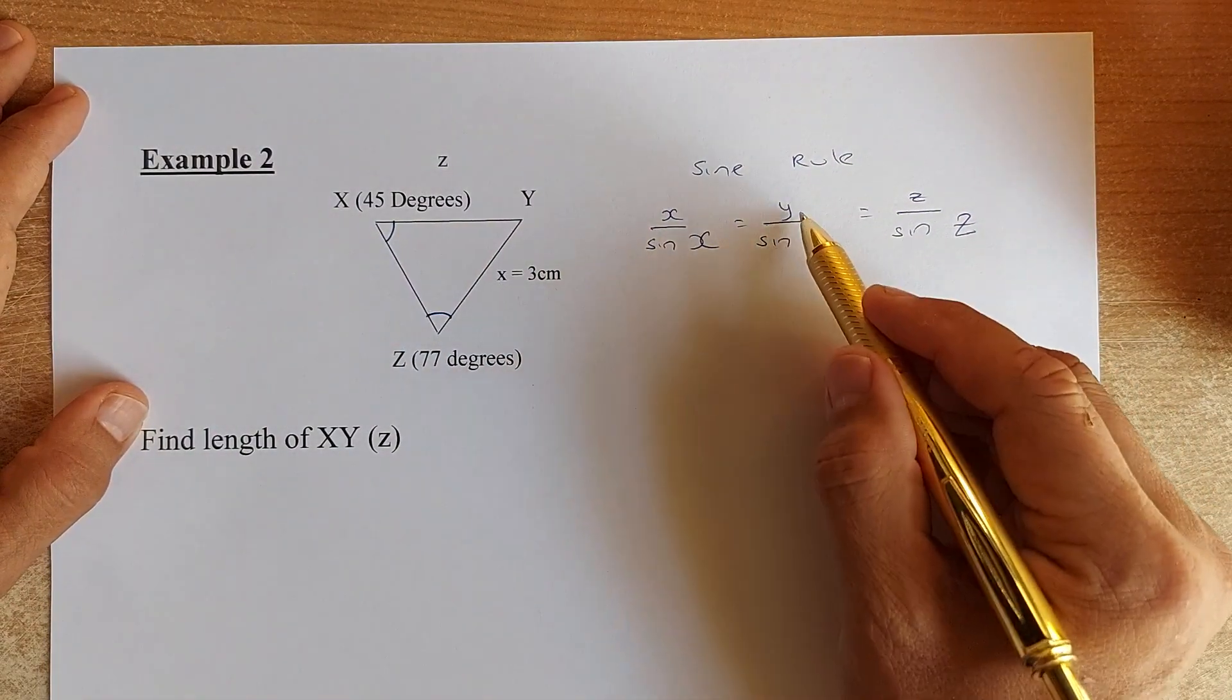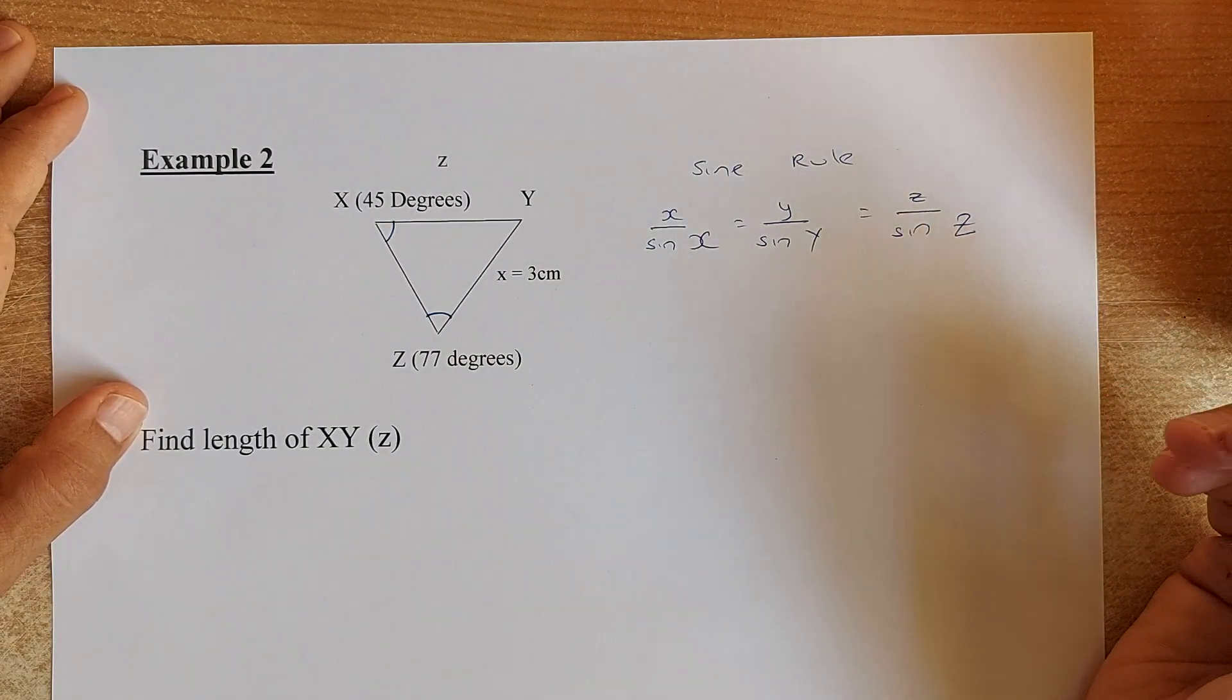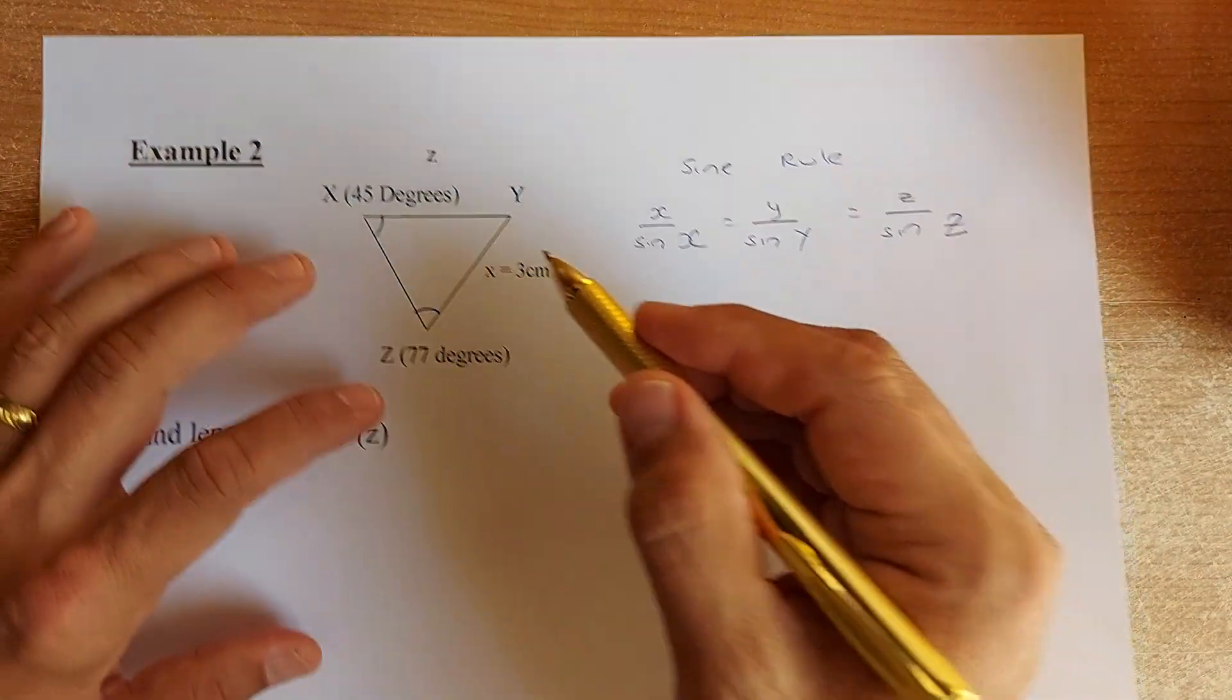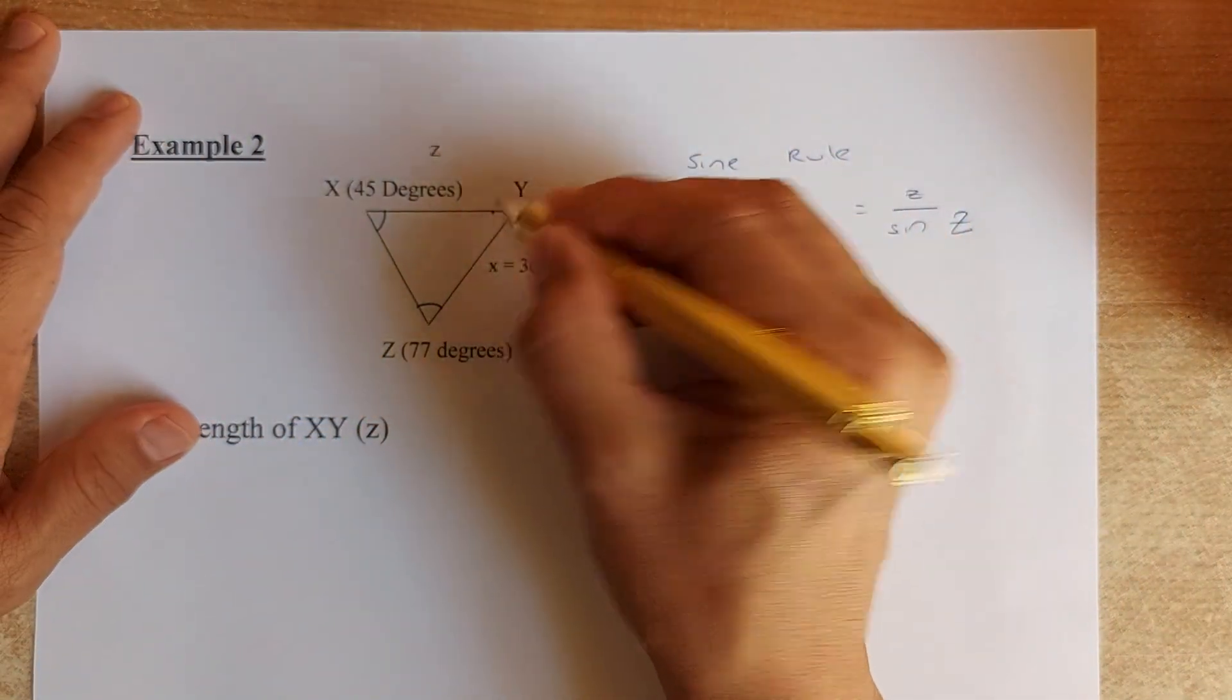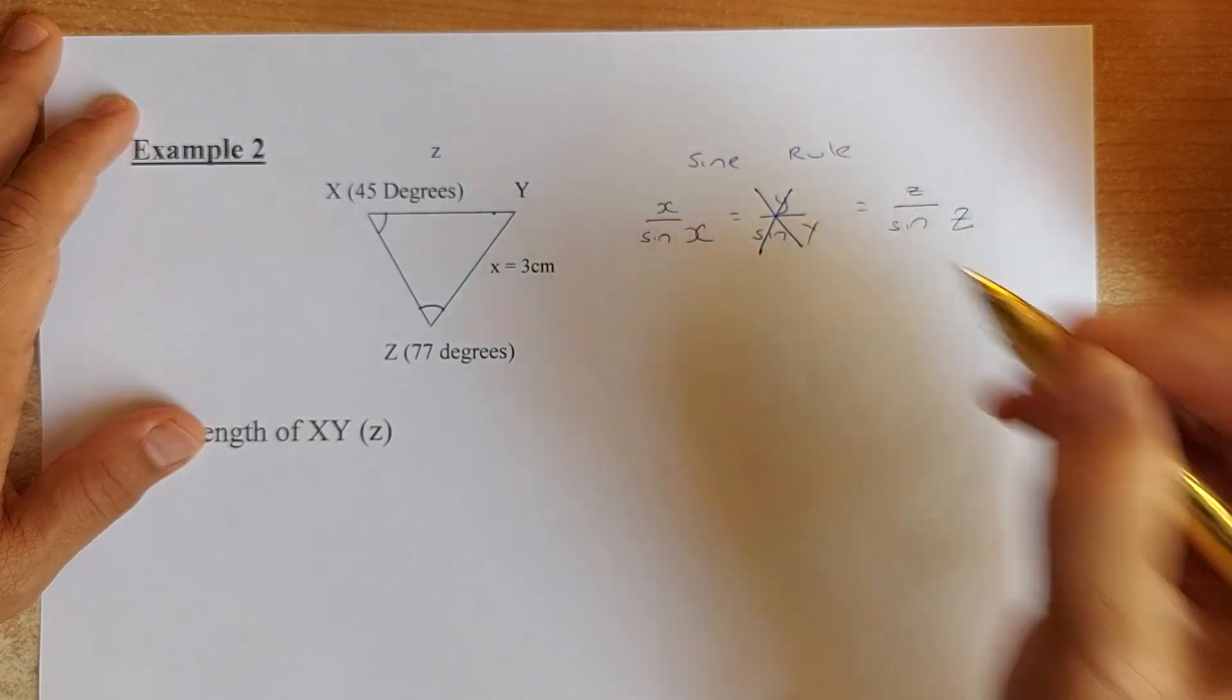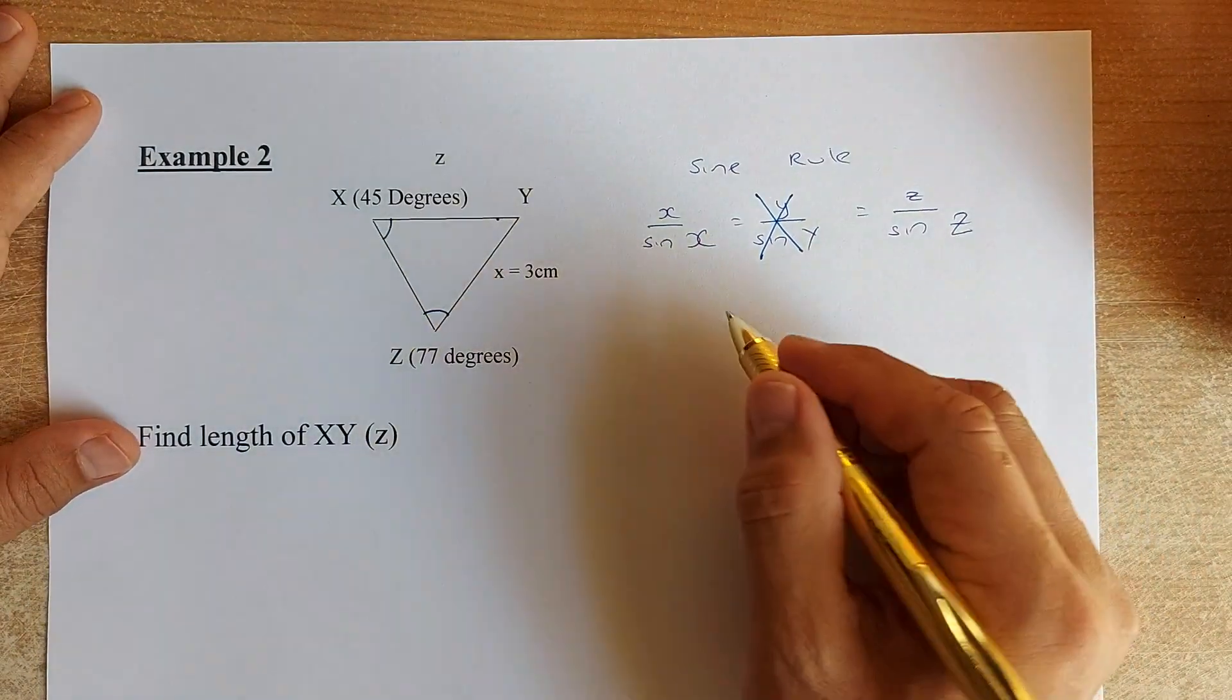x/sin(X) equals y/sin(Y) equals z/sin(Z). In this case, we have X, we have Z, we do not have Y. There is no Y. So we are going to cancel the Y. Now the next step, we are going to put the numbers into the equation.